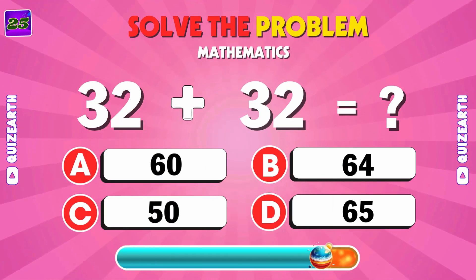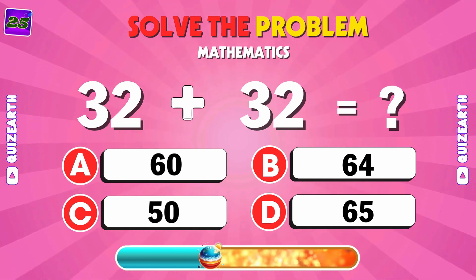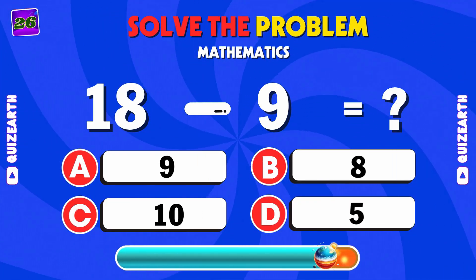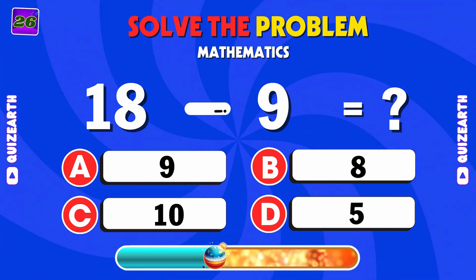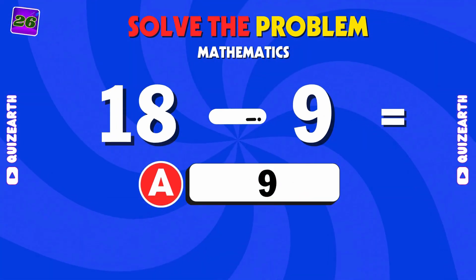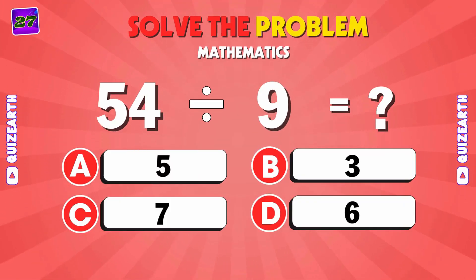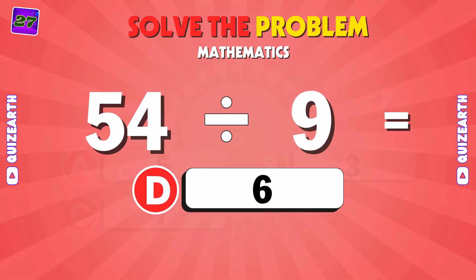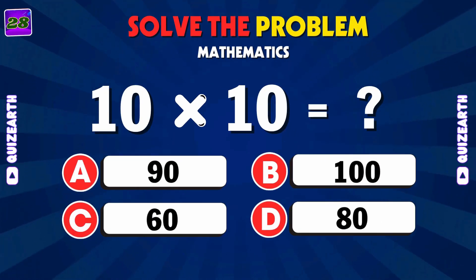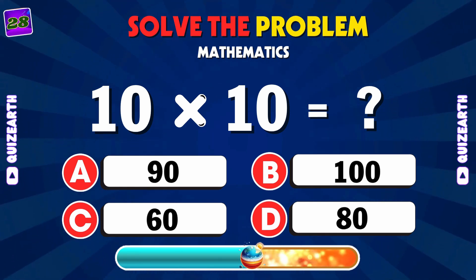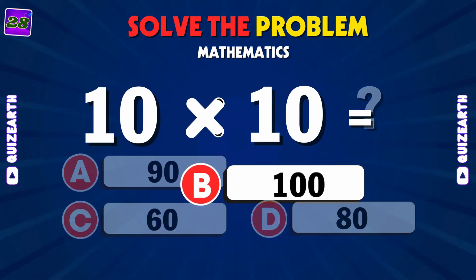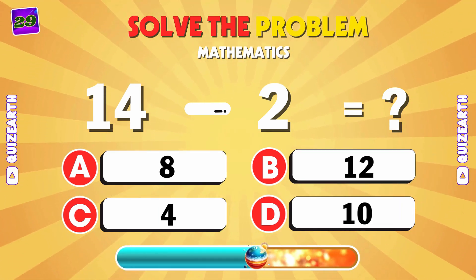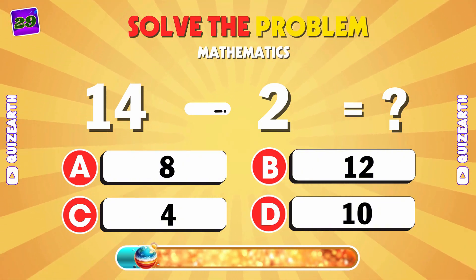Double up. What's 32 plus 32? B: 64. What's 18 minus 9? A: 9. What is 54 divided by 9? B: 6. Subtract it. What's 14 minus 2? B: 12.